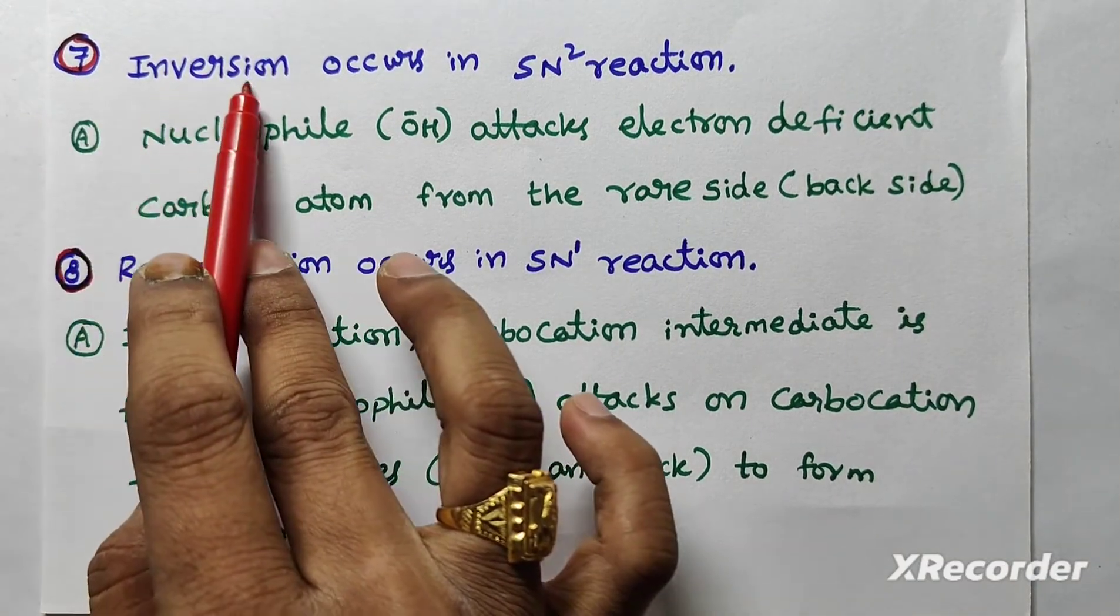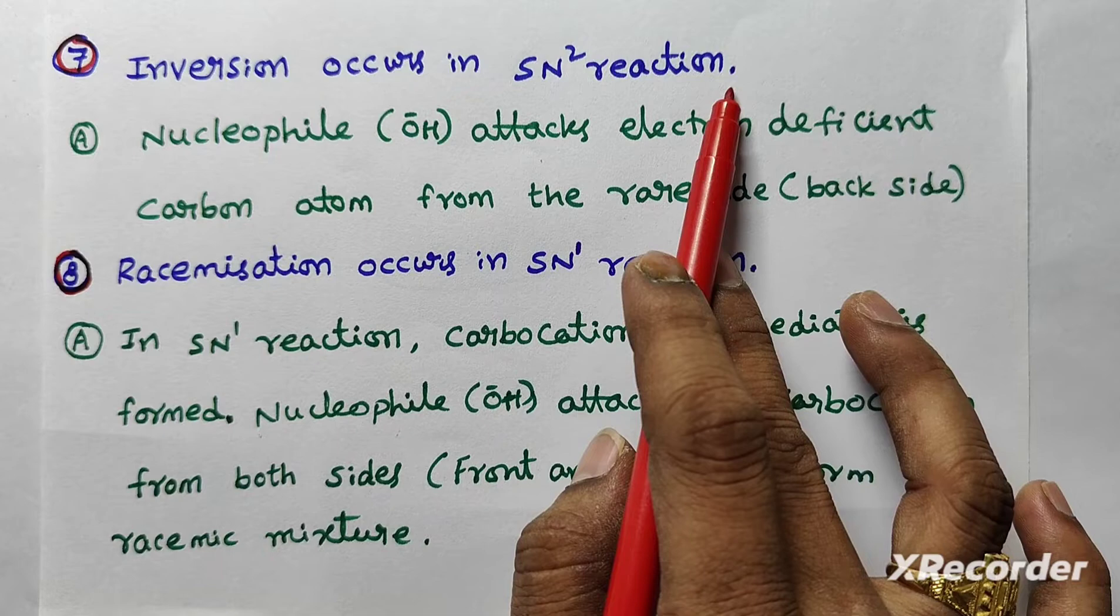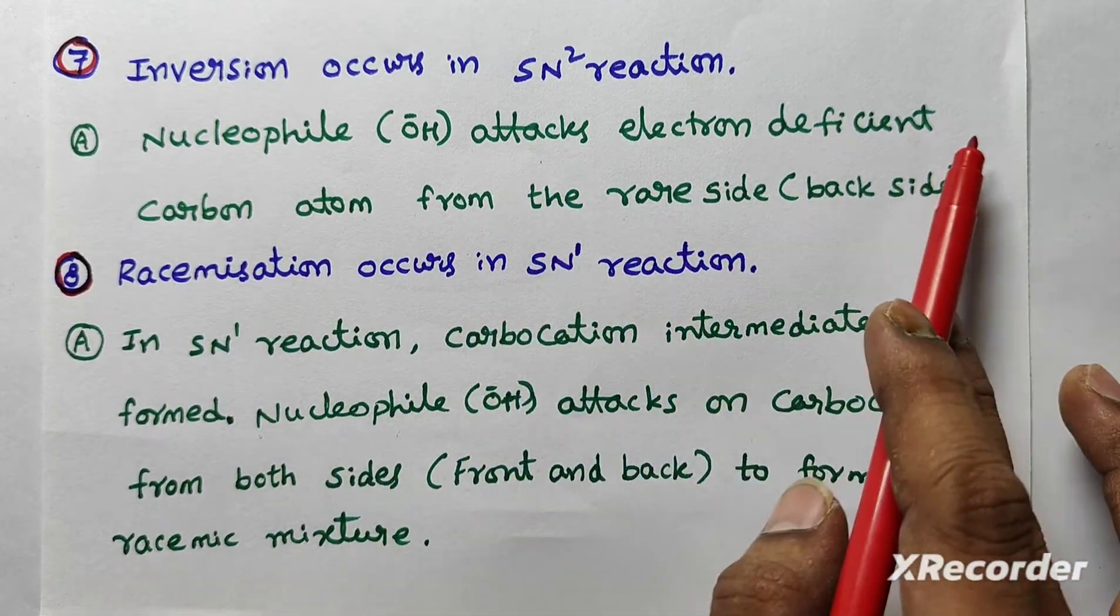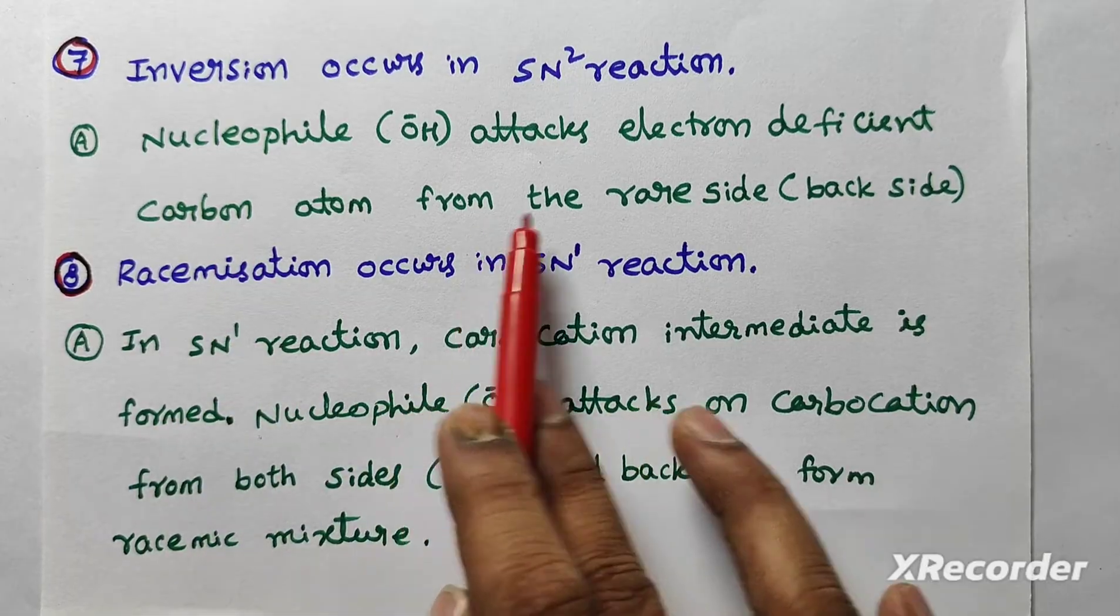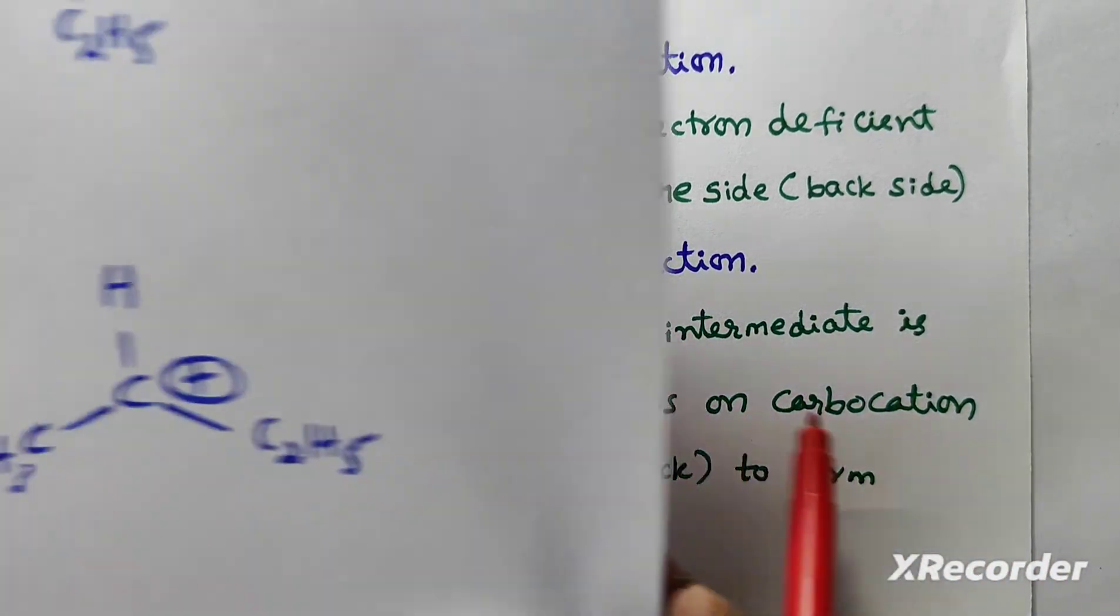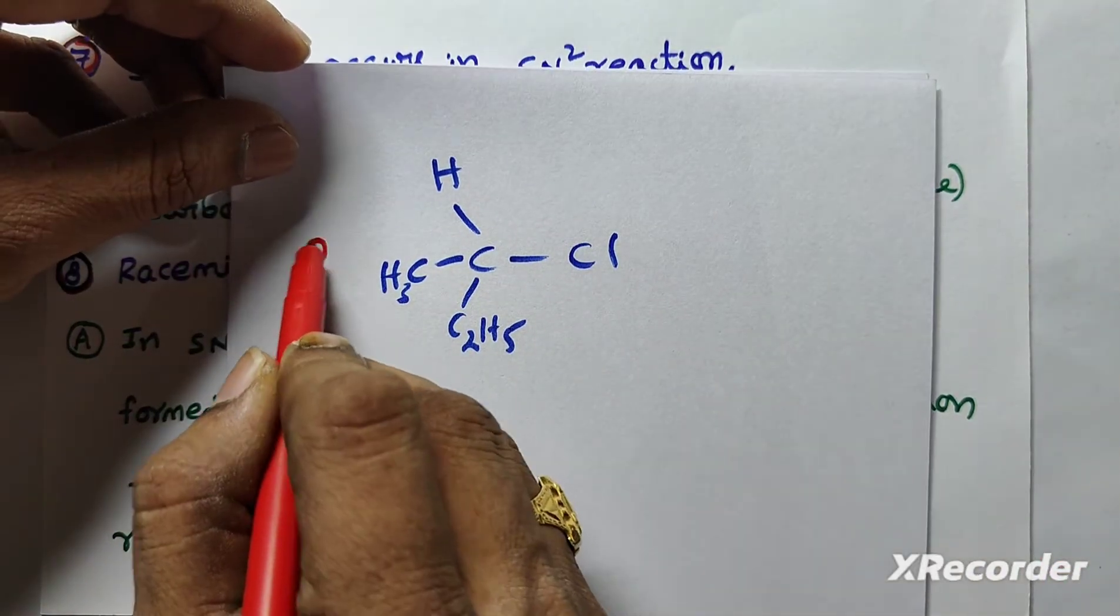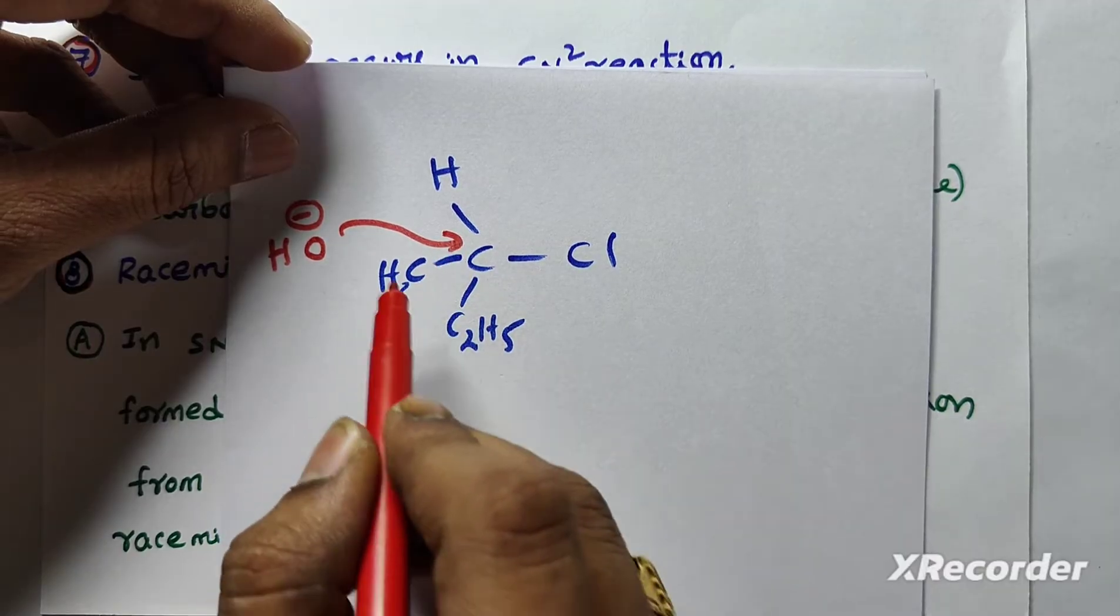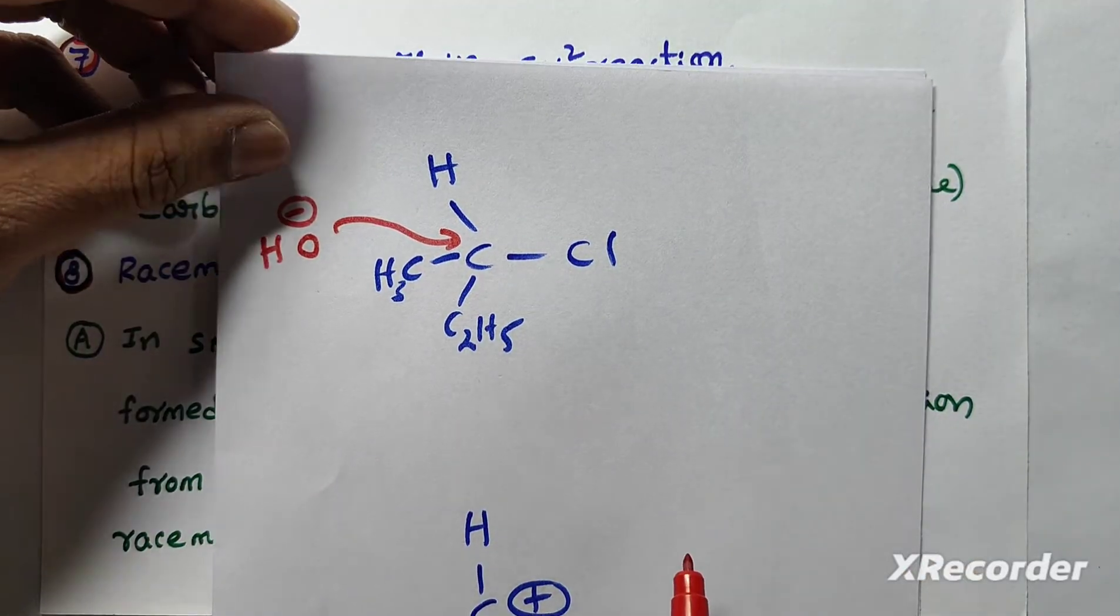Seventh question. Inversion occurs in SN2 reaction. Give reason. Nucleophile attacks electron deficient carbon atom from rear side or back side. That's why inversion occurs. Look at this. Here, SN2 reaction. Nucleophile attacks from back side. So that's why inversion takes place.